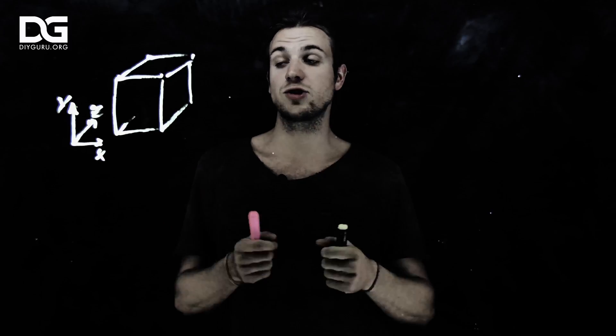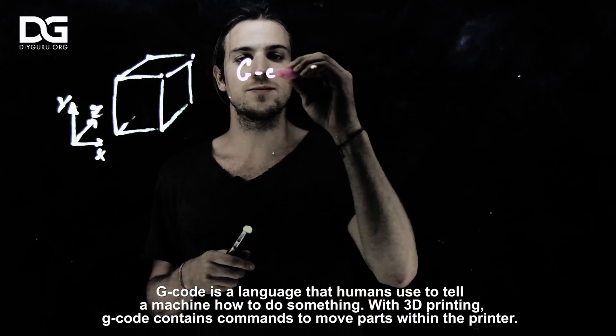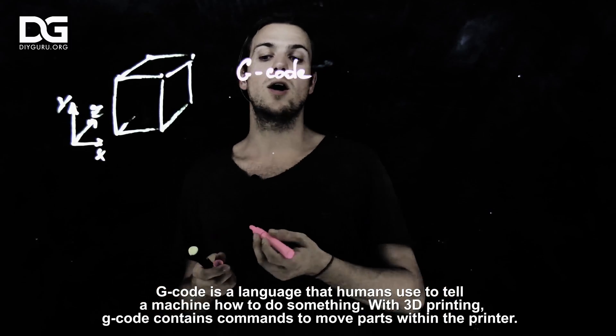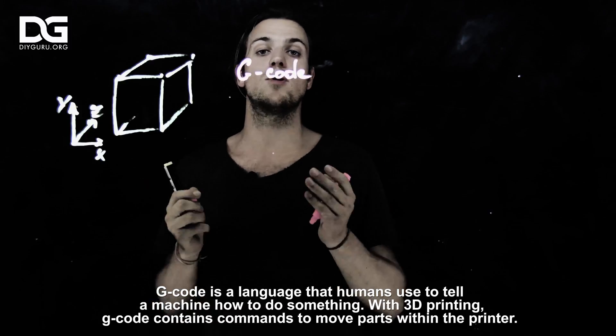Those instructions are actually called G-code. G-code is a language, a pretty old one actually. It was invented in the late 50s in order to help operators to control the very first automatic machines.